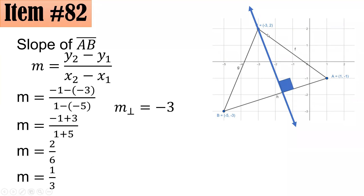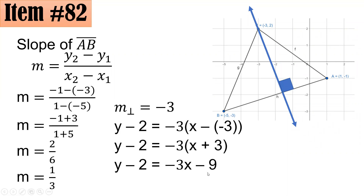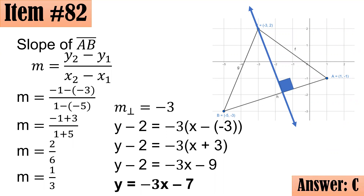With slope -3 passing through C(-3, 2), using point-slope form Y - Y₁ = M(X - X₁): Y - 2 = -3(X - (-3)), so Y - 2 = -3(X + 3) = -3X - 9. Adding 2 to both sides gives Y = -3X - 7. So if you answered letter C, congratulations.